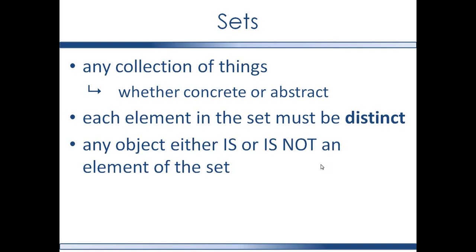Now, each element in a set must be distinct. In other words, the set of Gilbert cats would not contain two versions of Misty the cat. Misty is a distinct entity and appears only once in any representation of that set. Also, any object either is an element of a set or is not an element of a set. So for example, Joey, the Salvatore's cat, is definitely not an element of the set of Gilbert cats.